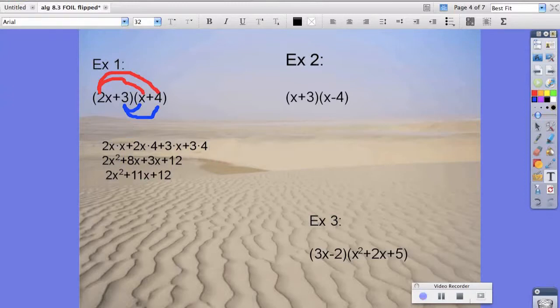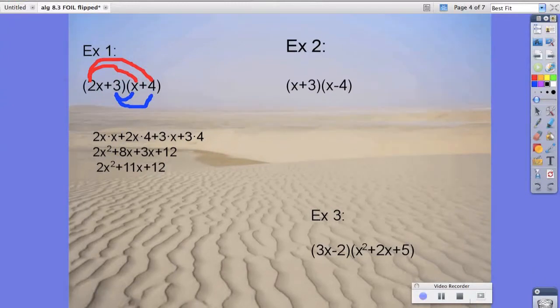So that's how we do it for example 1. Example 2 is the same exact thing. Just keep in mind we have a minus 4 here, or a negative sign. So we'll do first, outer, inner,